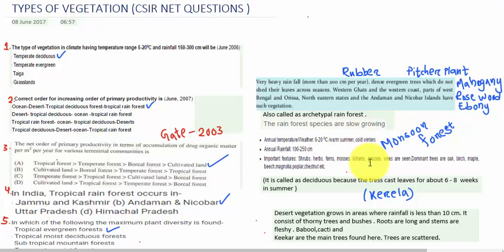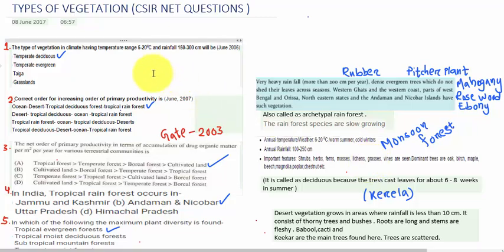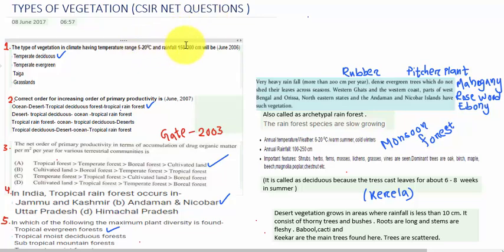The dominant trees are oak and maple. It is called deciduous because the trees generally cast their leaves. You need to choose the answer by looking at the temperature and the rainfall range.